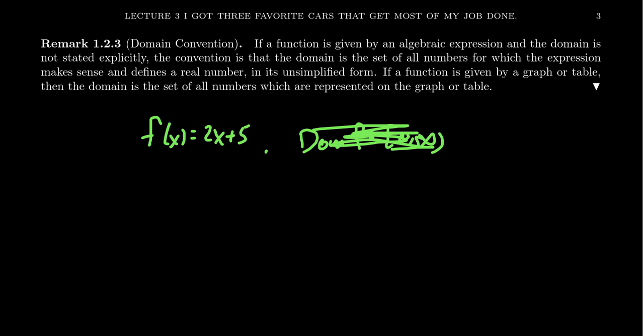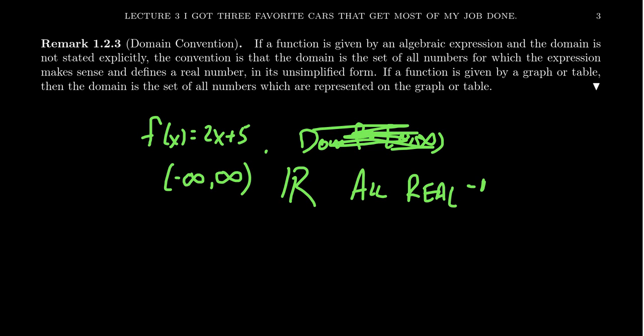If a function is given by a graph or table, the domain is all those numbers represented on the graph or table. For an algebraic function we infer what makes sense from the formula. Assuming X is a real number, is there a real number we cannot multiply by 2? No. Can we add 5 to any number? Yes. So there's no restriction on X, and the domain would be all real numbers — written in interval notation as negative infinity to infinity, or using the double R symbol.